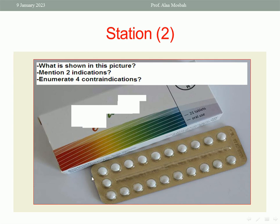It is 21 tablets of COC. It is used as a contraceptive method, cyclic, for 21 days, then seven days free, then repeat another strip. Another indication: it can be used in treatment of dysmenorrhea and endometriosis.